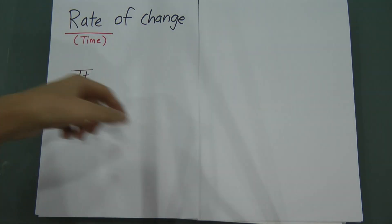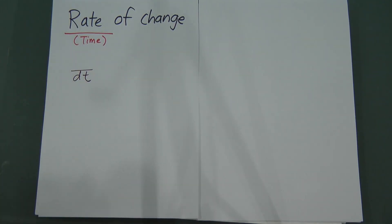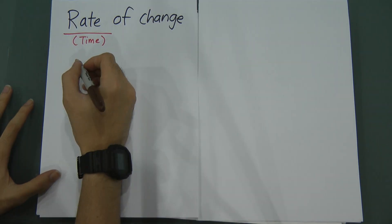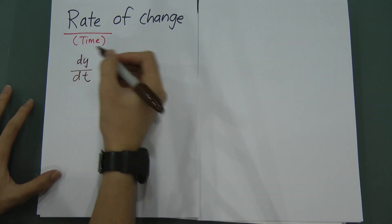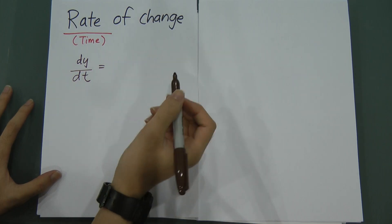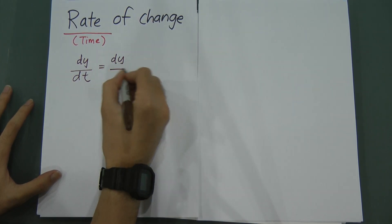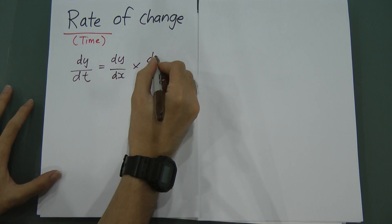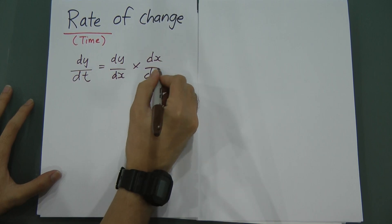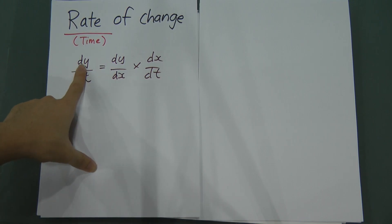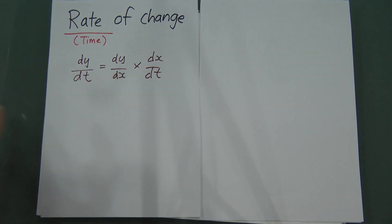In the differentiation chapter, you'll learn one rule called the rate of change rule. That rule is: DYDT will equal to DYDX multiplied by DXDT. This is the formula. So how are you going to remember this formula? Let me show you.